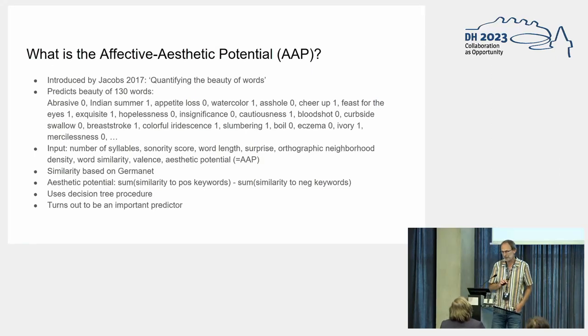The affective aesthetic potential could be a concept suitable especially for the literary domain. So what did Arthur Jacobs do? The concept was introduced in an article from 2017, quantifying the beauty of words, in which Jacobs tried to predict the beauty of 130 German words. The ones are the beautiful words and the zeros are the ugly words. It's presented as beauty of words, but there's a very clear aspect also of the meaning. For instance, hopelessness and insignificance may not be so much about the beauty as a sound, but also the meaning is involved.